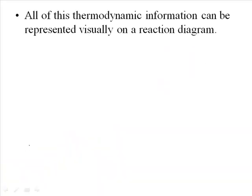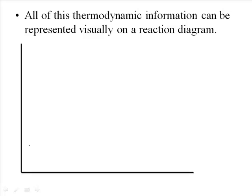There is a lot of information in thermodynamics, and because so much of it is numerical and involves positives, negatives, and different magnitudes of numbers, it can be really nice to just use some visual representations. So very commonly we can draw what's called a reaction diagram that describes all this different information at once. A reaction diagram is really just a chart or a graph. On the y-axis we usually label something like energy — often the Gibbs free energy. On the x-axis we have the reaction progress or time.